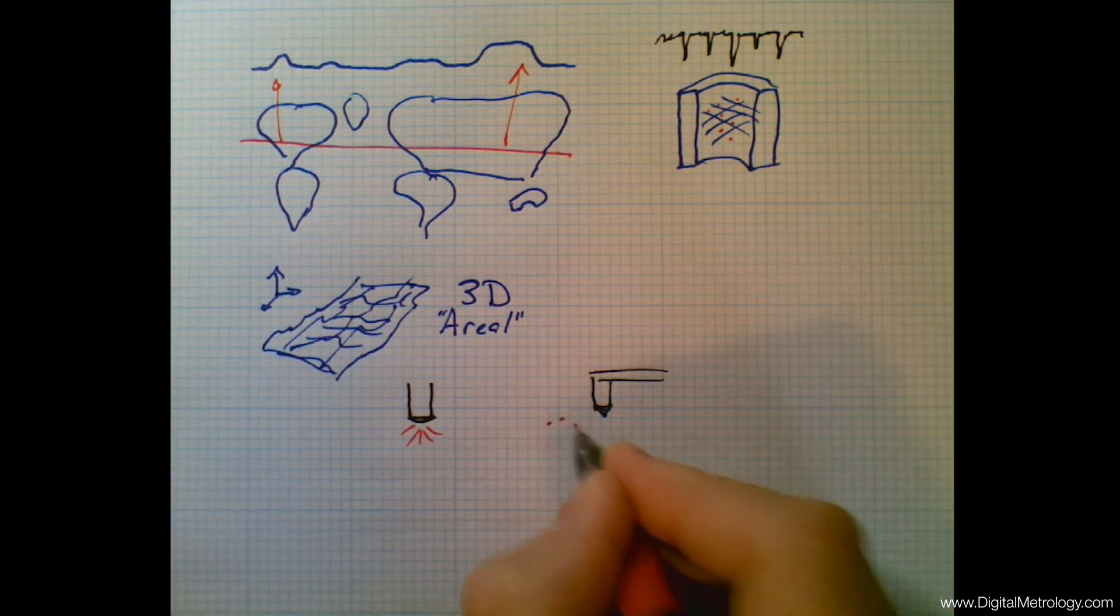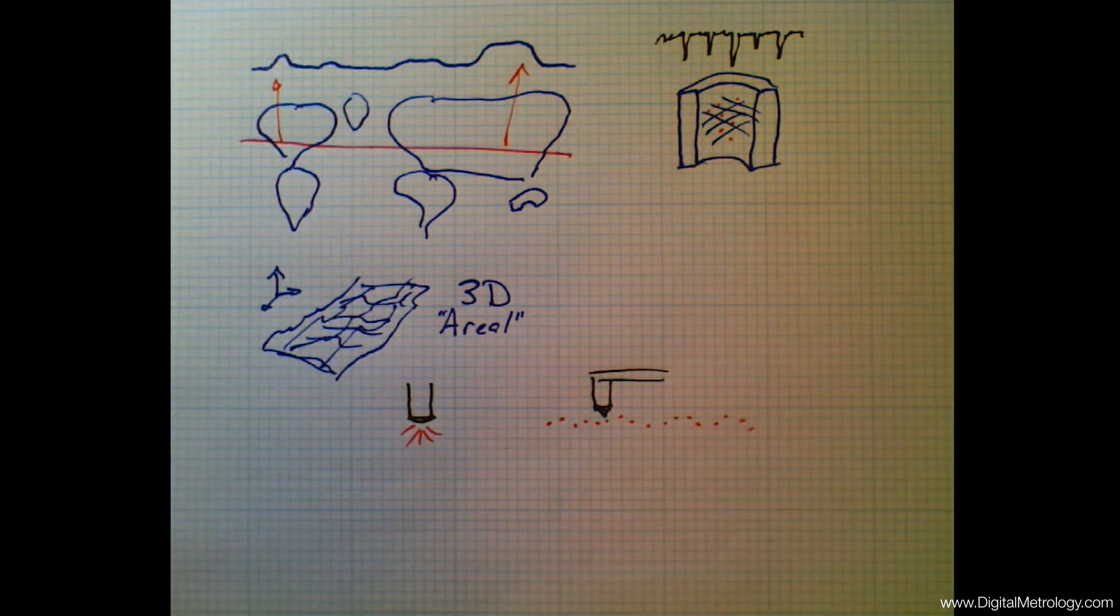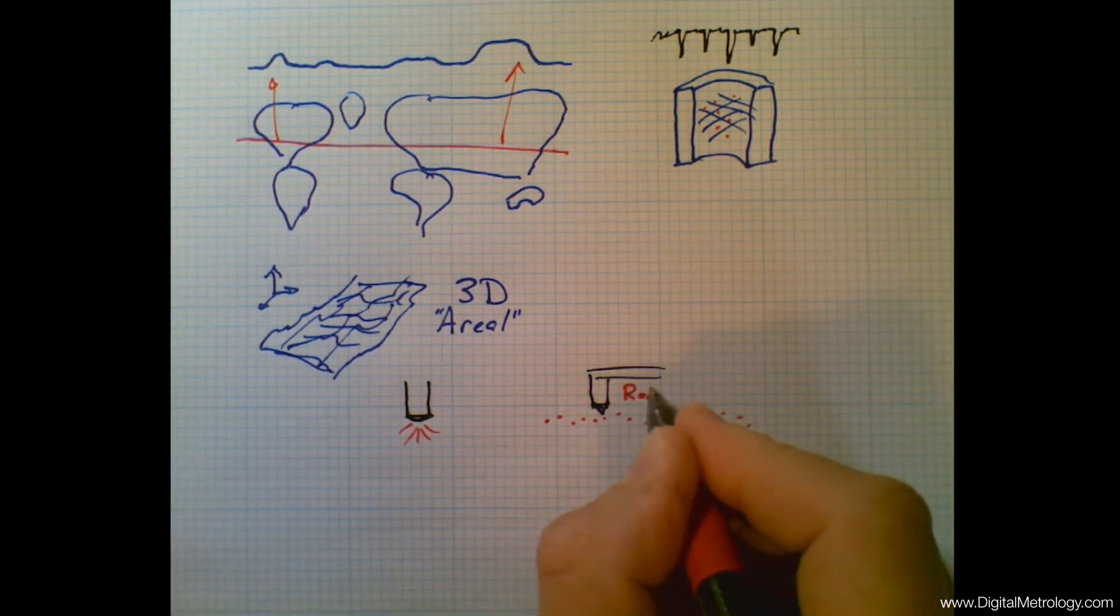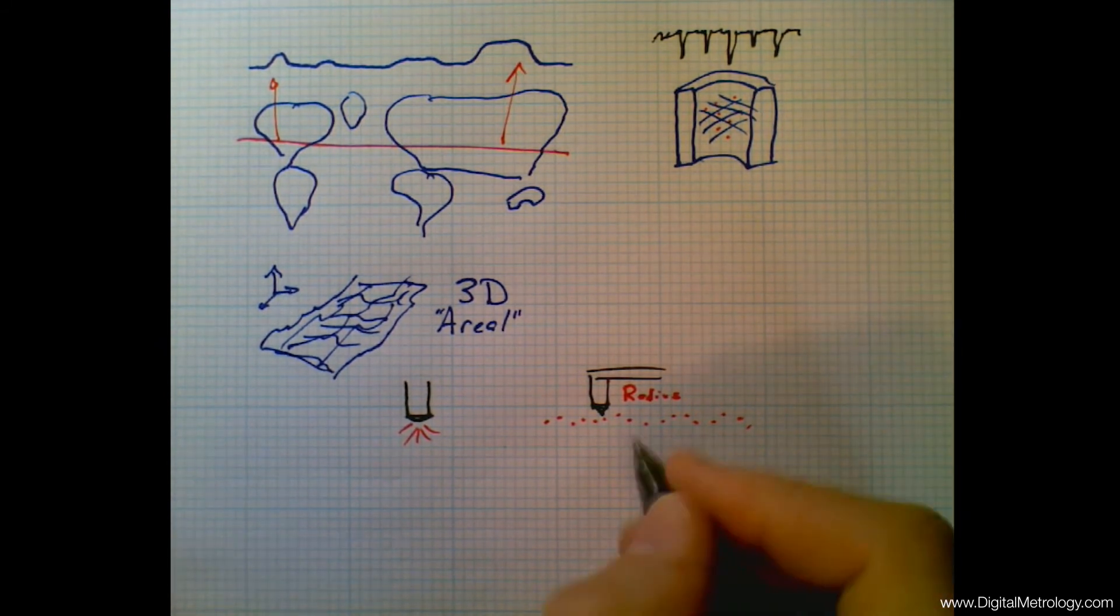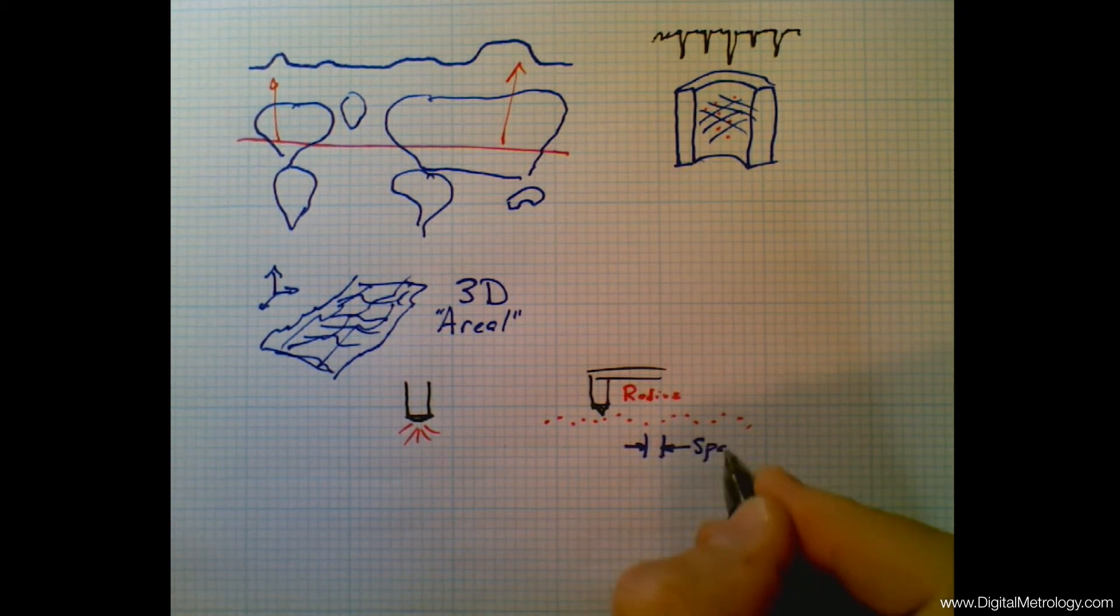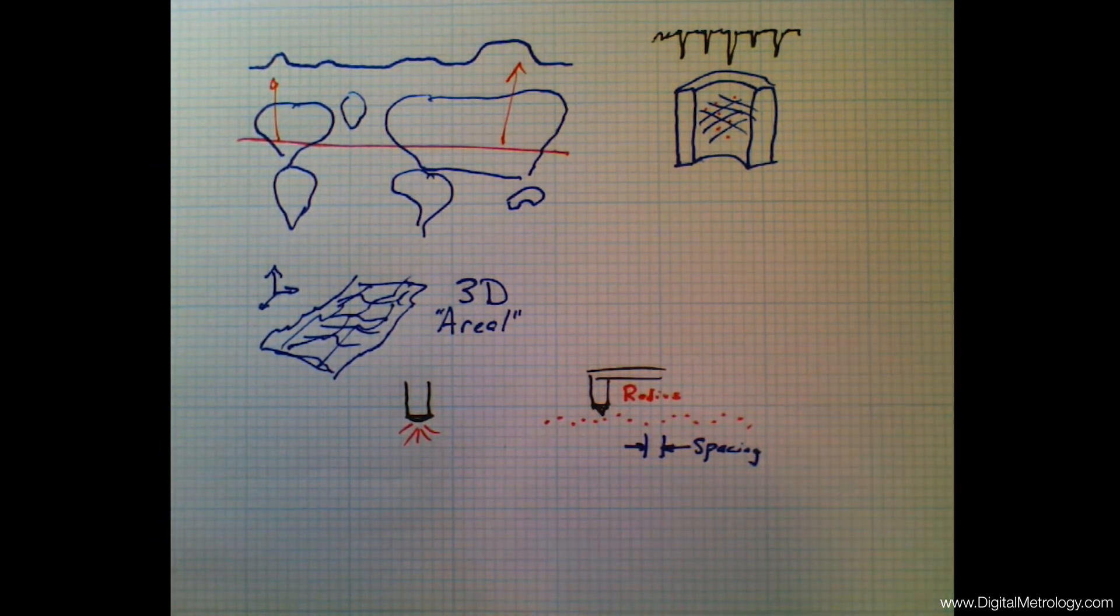So for example, our stylus instrument is collecting data points along the way to create the profile graph. This data set was created by some radius, the tip radius of the stylus itself. It's being moved along and collecting data at some spacing and those are the two pieces of kind of resolution. A tip radius and a spacing sets up our ability to see fine details. There's more on that in our previous video. And we also are measuring along some length.